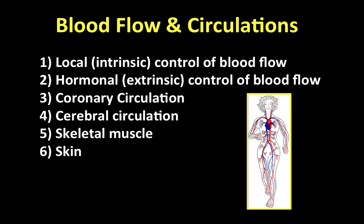In the second video we reviewed the hormonal extrinsic control of blood flow, including sympathetic innervation of vascular smooth muscle. We talked about other vasoactive hormones including histamines and bradykinin which cause arterial dilation, serotonin and prostaglandins. For prostaglandins, prostacyclins and the E series are vasodilators, while the F series and thromboxane A2 are vasoconstrictors.